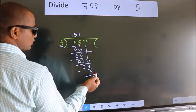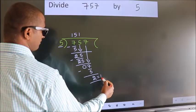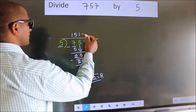No more numbers to bring it down. So, we stop here. This is our remainder. This is our quotient.